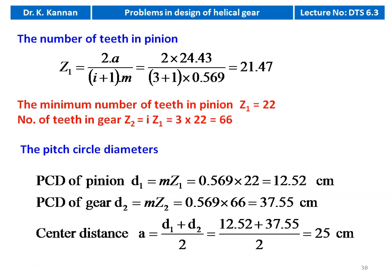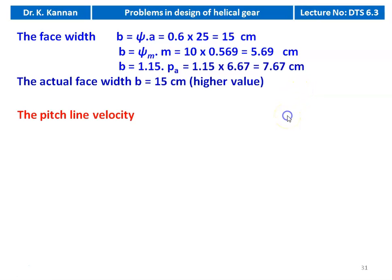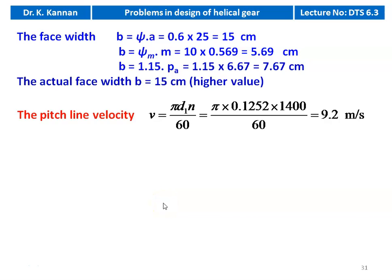PCD of pinion d1 = m × Z1 = 0.569 × 22 = 12.52 cm. Centre distance A = (d1 + d2) / 2 = (12.52 + 37.55) / 2 = 25 cm. Face width: three equations — B = ψ × A = 0.6 × 25 = 15 cm; B = ψm × m = 10 × 0.569 = 5.69 cm; B = 1.15 × PA = 1.15 × 6.67 = 7.67 cm.